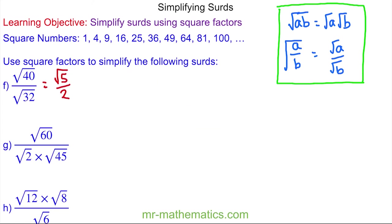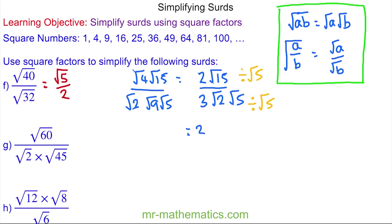For question g, we simplify the square root of 60: root 4 is a factor, so root 4 times root 15, giving 2 root 15. There are no square factors of 15. For the denominator, the square root of 45 is root 9 times root 5, and root 9 is 3, giving 3 root 5, multiplied by root 2. We then simplify by dividing both numerator and denominator by root 5, giving 2 root 3 over 3 root 2.